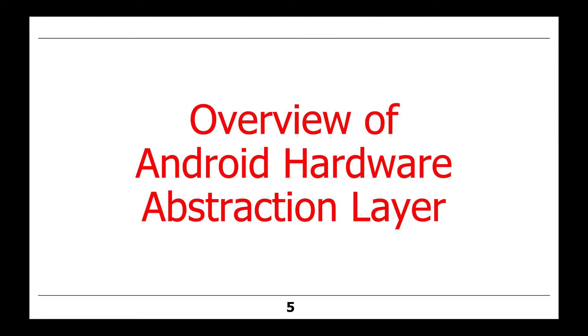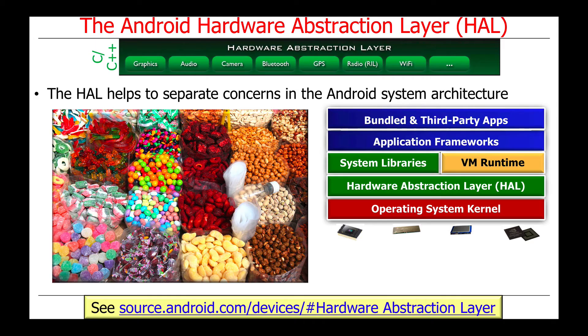Let's start by giving an overview of the Android hardware abstraction layer. One of the main goals of the HAL is to help separate concerns in the Android systems architecture. This is a common technique used in many large-scale software development projects in order to isolate key challenges and complexities to certain layers, so layers atop can be simplified, as we discussed earlier in our lesson when we talked about the Android application of the layers pattern.